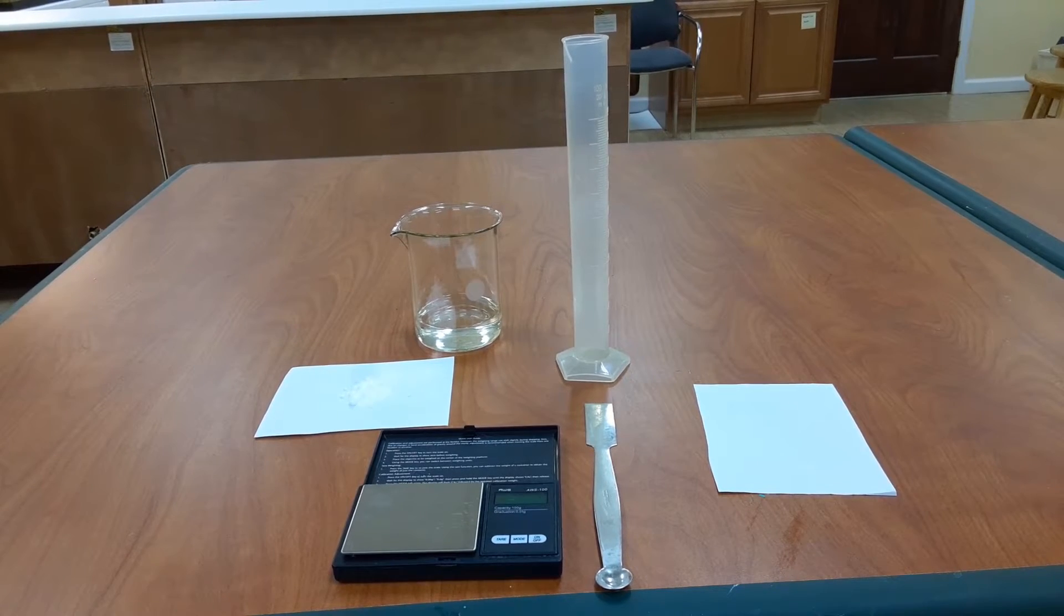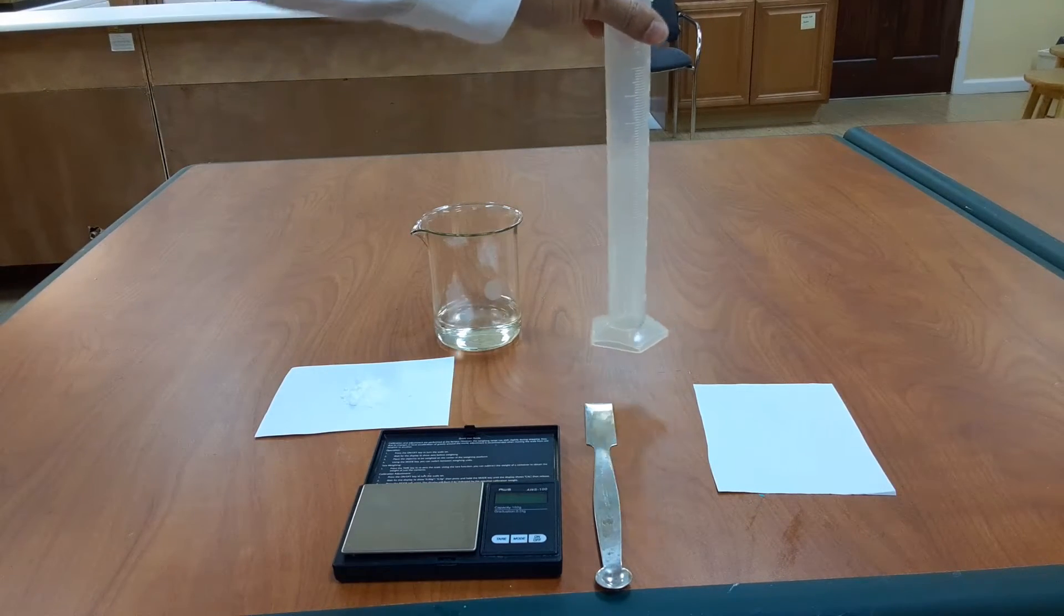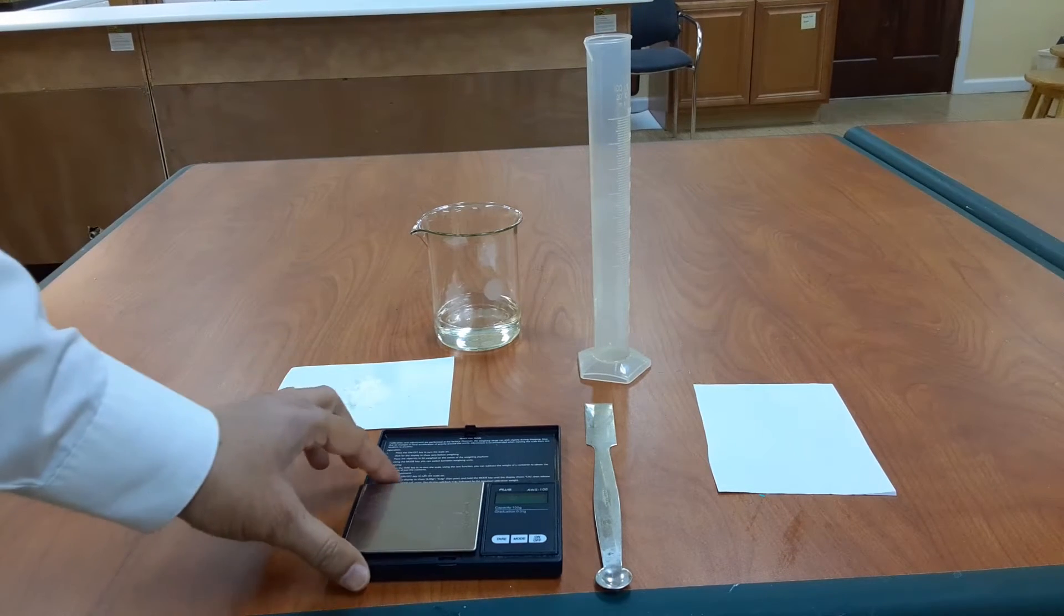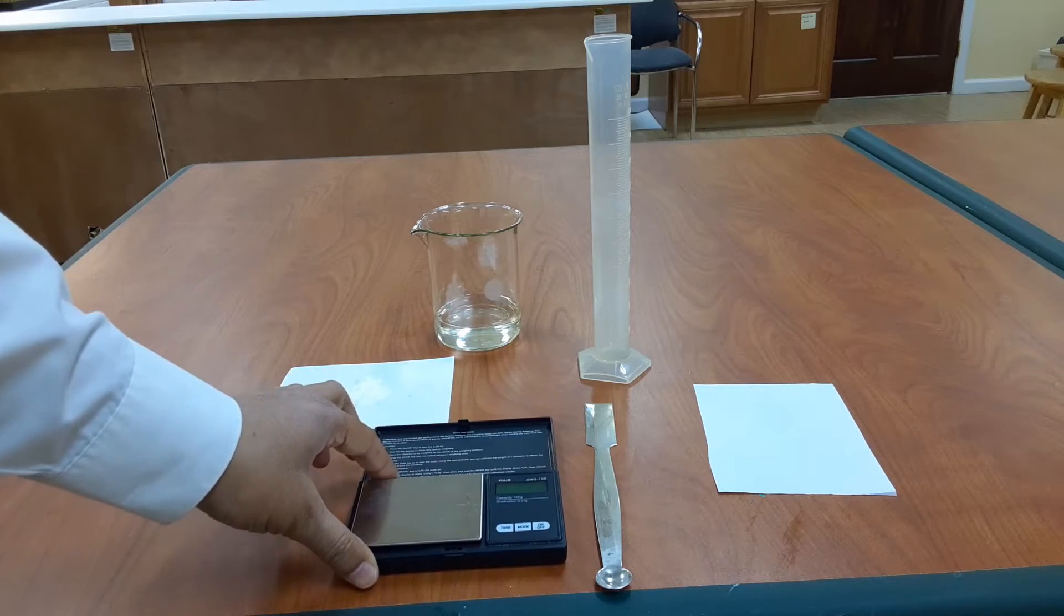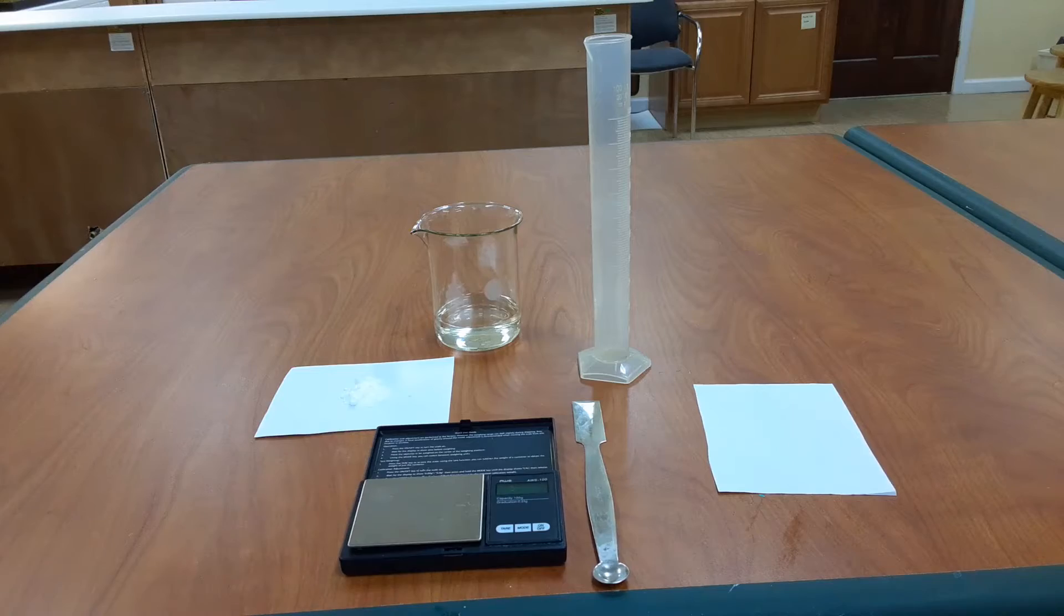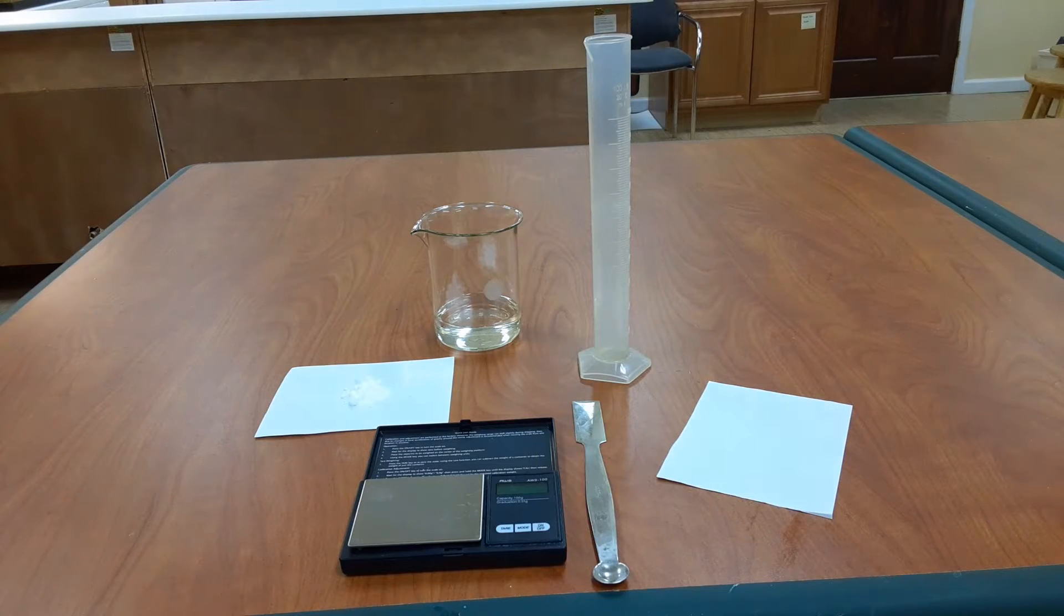Here I have everything I'm going to need for this lab. I have some vinegar in a beaker, a measuring cylinder or graduated cylinder, some baking soda on a piece of paper, my digital balance for measuring masses, a spatula for transferring the baking soda, and this additional sheet of paper which I will use to measure the mass of baking soda. Once we have everything we need, we can get started and start making some measurements.